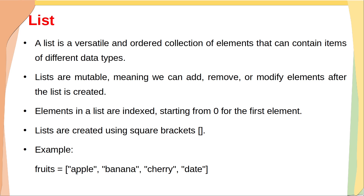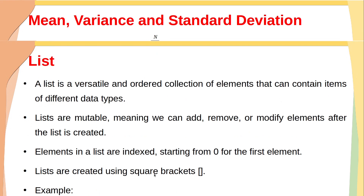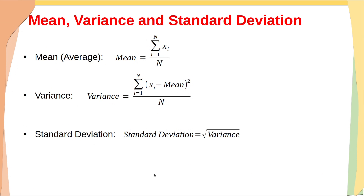In this example there are four elements, all separated by commas, and all of type string. But we can have elements of any data type — irrespective of data type, a list will contain any types of elements. Now let's see what mean, variance, and standard deviation are.